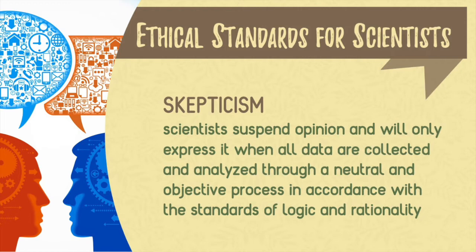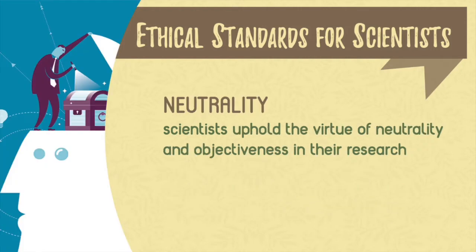The last ethical standard for scientists is neutrality. Neutrality means that scientists uphold the value of neutrality and objectiveness in their research. As much as possible, they remove all potential sources of bias, locate where subjectivity could be sourced from, and try to eliminate it.